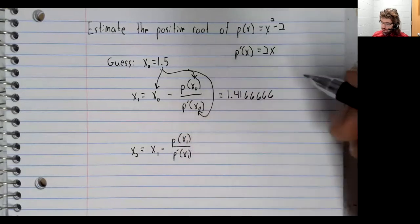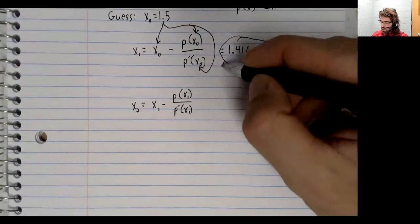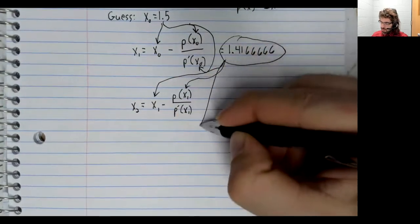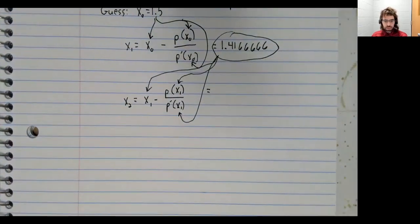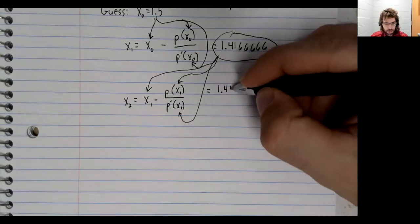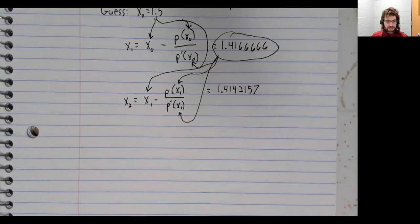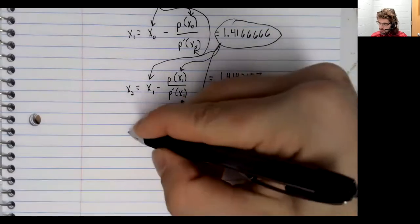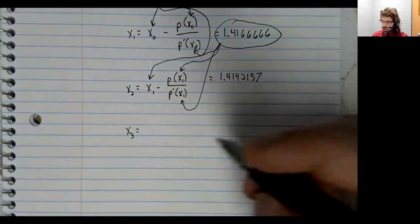So we're going to take this and stick it in there and there and there. And we get 1.4142157 for x2. If we want x3...